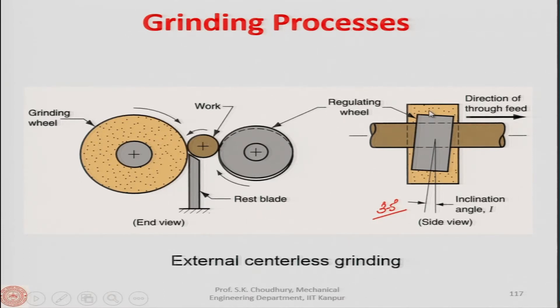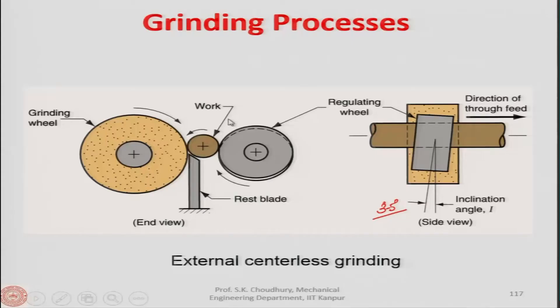The regulating wheel is located at an angle of approximately 3 to 5 degrees with respect to the axis of the grinding wheel. This angle creates a force component along the axis of the workpiece, which provides the axial feed. Without this angle there would be no additional device to feed the workpiece along its length, so the rotation of the regulating wheel inclined at 3 to 5 degrees provides the axial feed force.